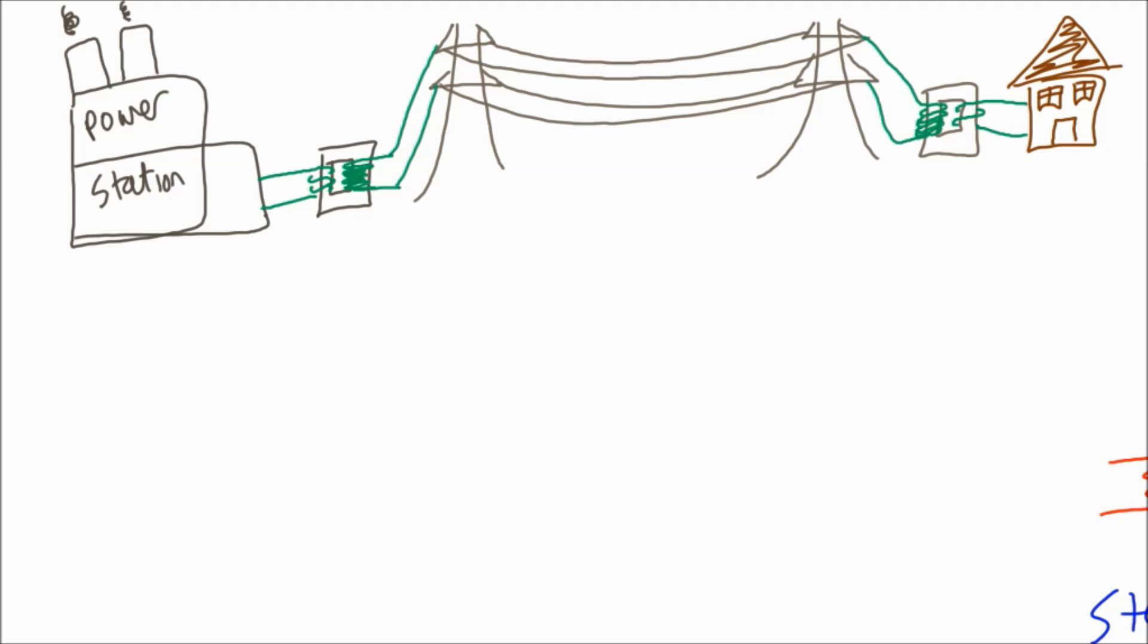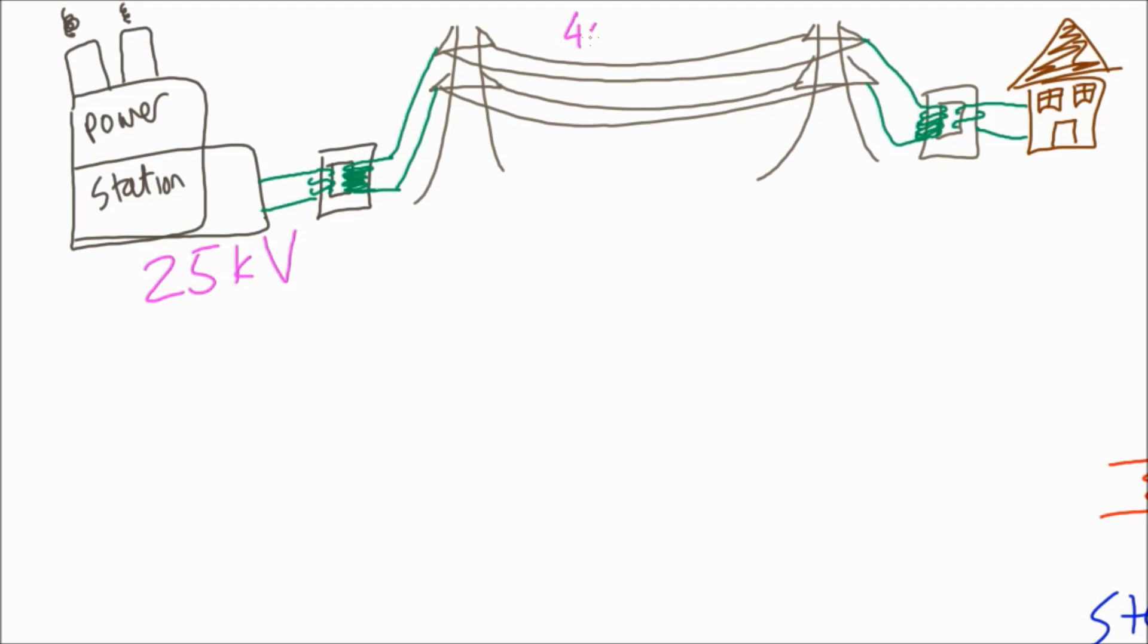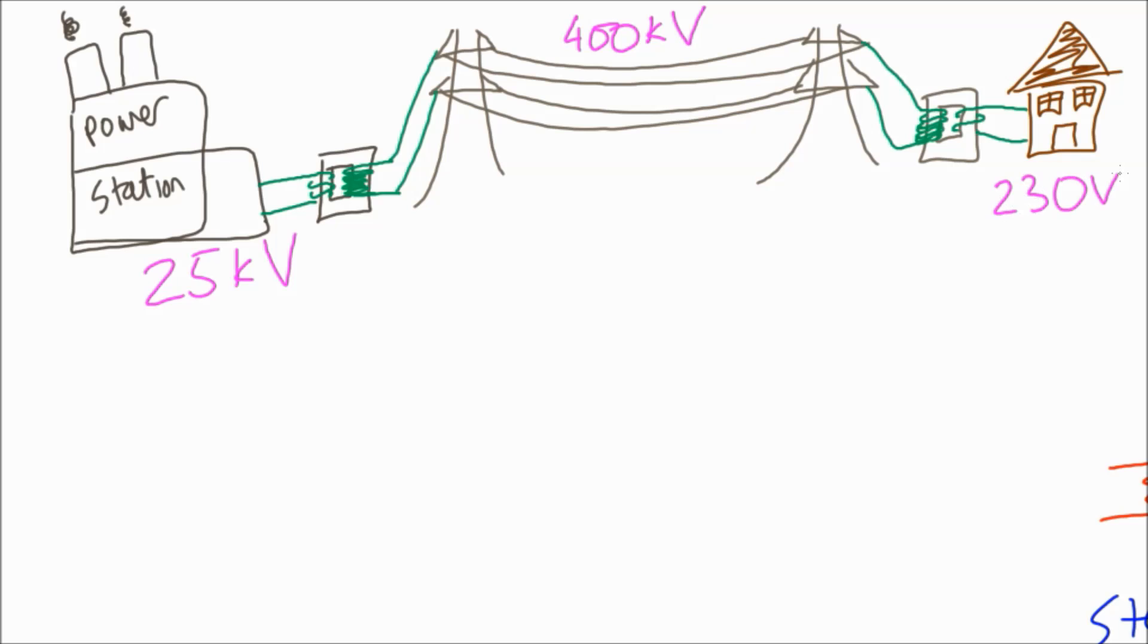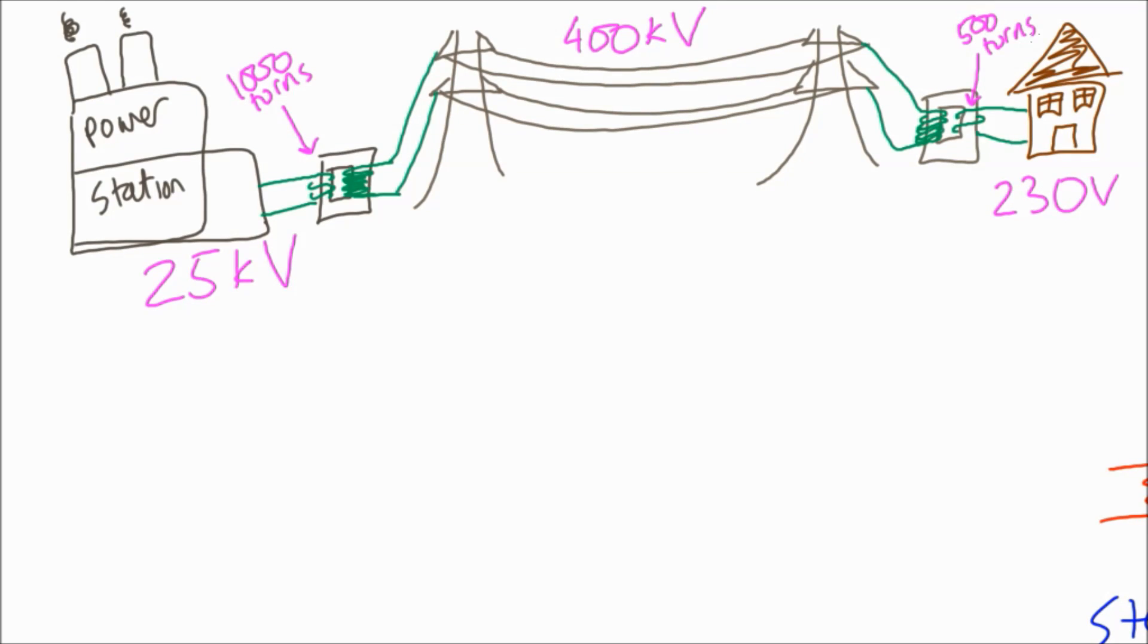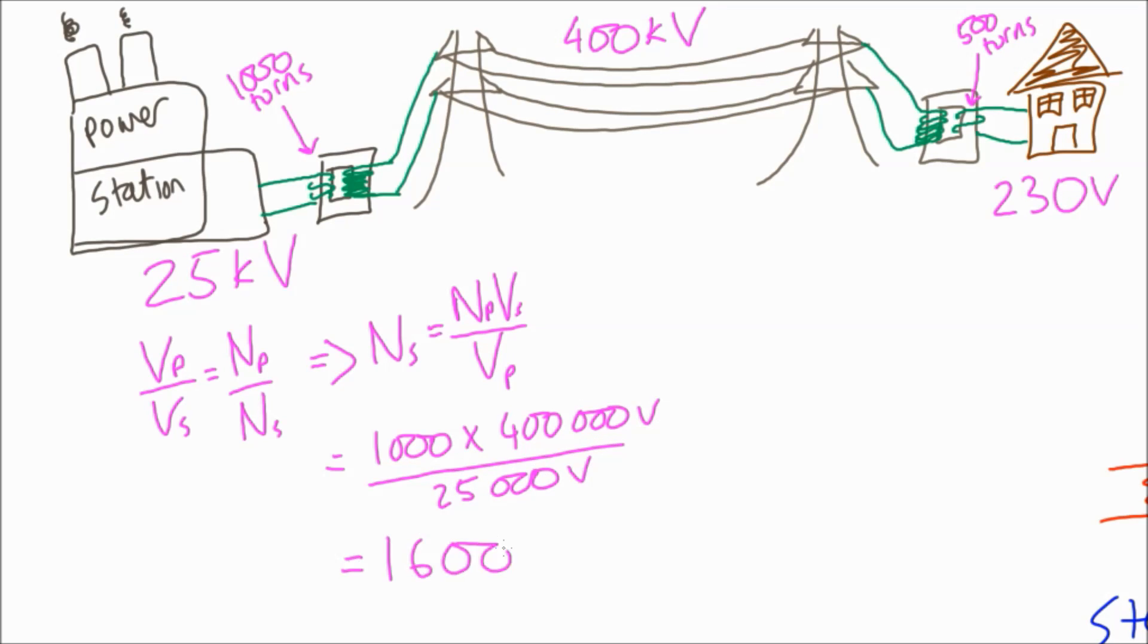So thinking about the voltages: output 25 kilovolts, moving at 400 kilovolts with the pylons and 230 volts in the house. If we know the number of turns on the primary coil for the power station, we could work out how many turns we need on the secondary coil to achieve that. It's just a case of rearranging the equation and plugging in some numbers, and hopefully you can follow that. We'll need 16,000 turns. We had 1,000 to start with. The other way you can look at it is you go 16 times bigger, the voltage gets 16 times bigger, so you need 16 times the amount of turns on the secondary coil.